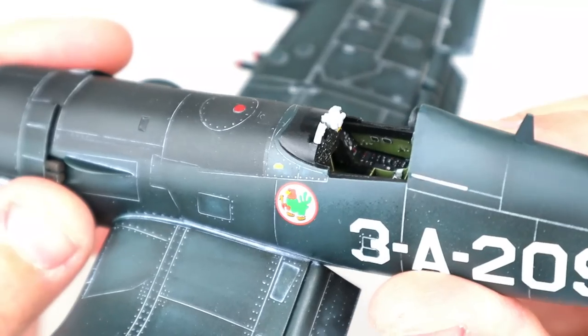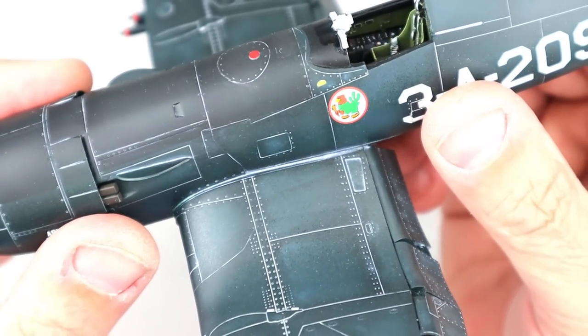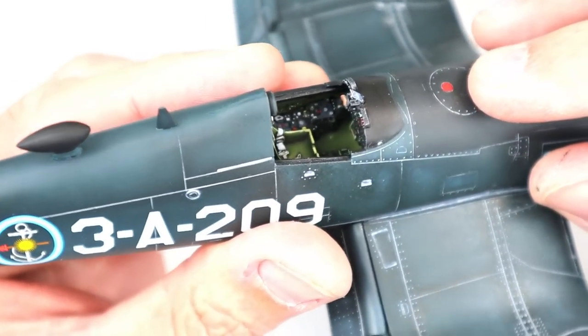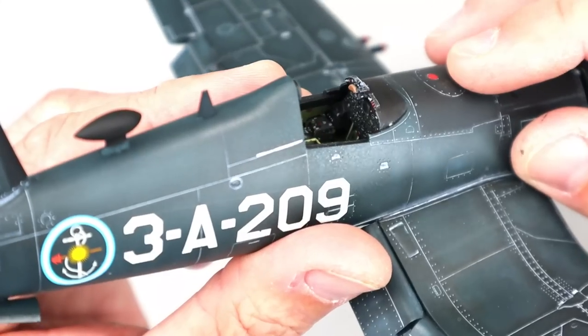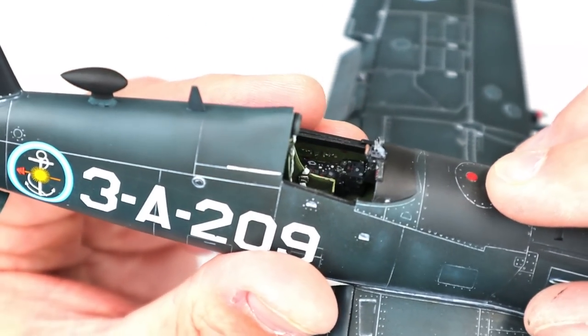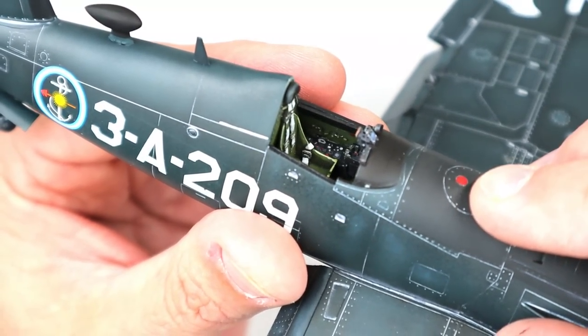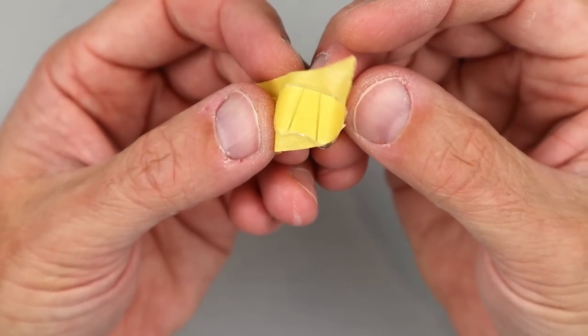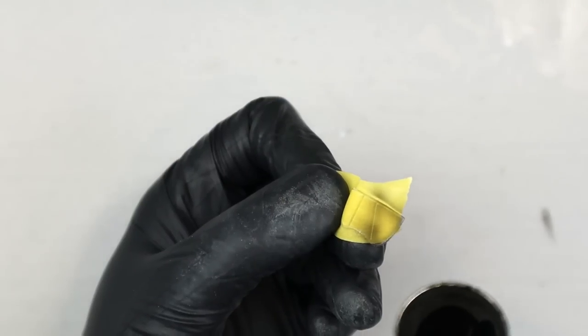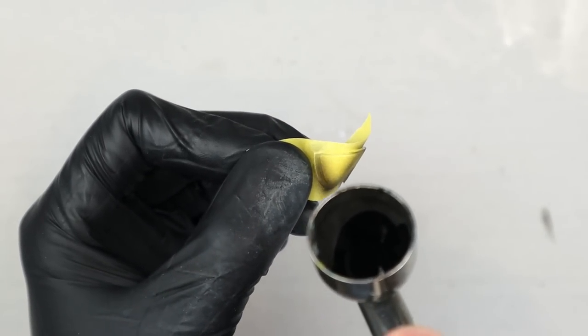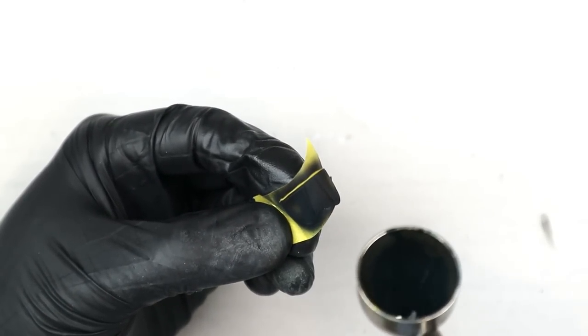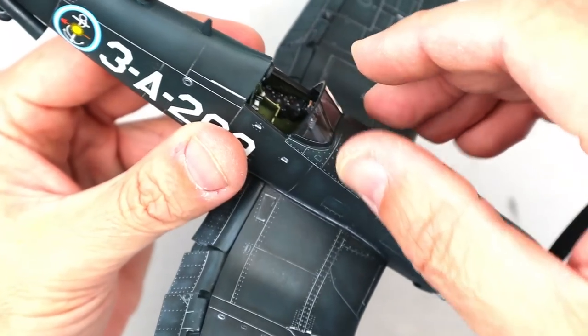The Wolfpack resin set comes with a nice little gun sight and the extra details that were on the forward instrument panel combing. I installed those using small drops of super glue and then painted them with Vallejo acrylics. I added a small piece of clear plastic to represent the reflector gun sight. I masked and sprayed both the windscreen and main canopy, first with a coat of flat black and then with a coat of that dark sea blue mix. The flat black that goes down first helps to represent the inside of the cockpit color. When that was complete, I installed the windscreen and canopy to the model.